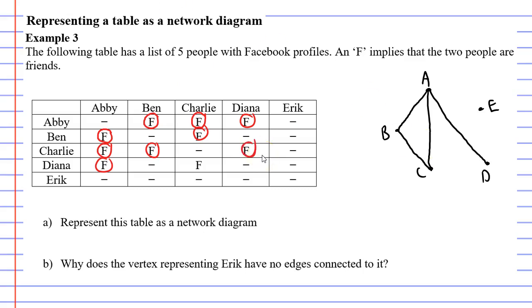And finally, Diana and Charlie are friends. So we need to connect C to D. And you'll notice that Eric has no friends at all. Poor Eric. Anyway, that's question A done.